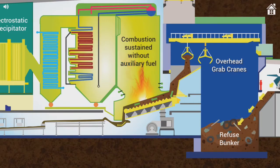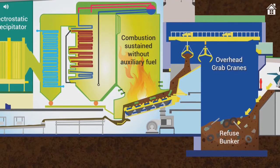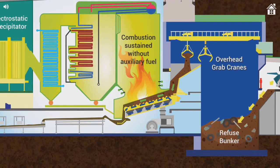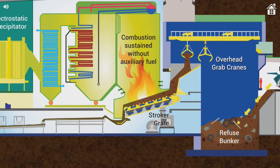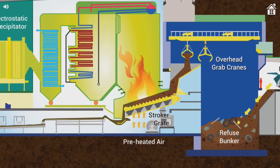The burning refuse is mixed, agitated and moved downwards by the moving stoker grate. Preheated air drawn from the refuse bunker is introduced through the underside of the grate.